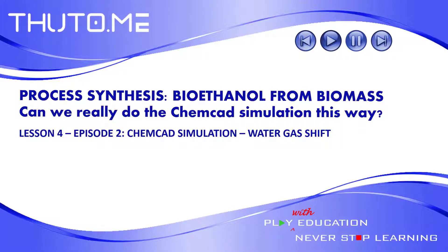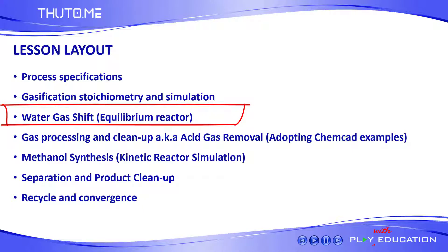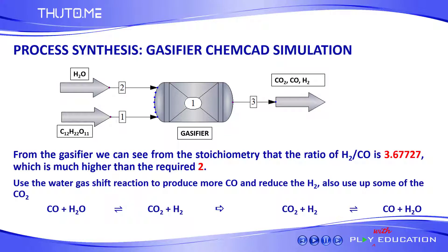In this episode of the Lesson 4 series, we are going to simulate the water gas shift reaction in order to correct the H2 to CO ratio to the value of 2, as required by the methanol synthesis reaction. From the gasifier, we can see from the stoichiometry that the ratio of H2 to CO is about 3.7, which is much higher than the required value of 2.